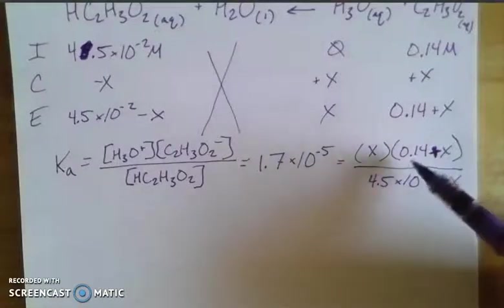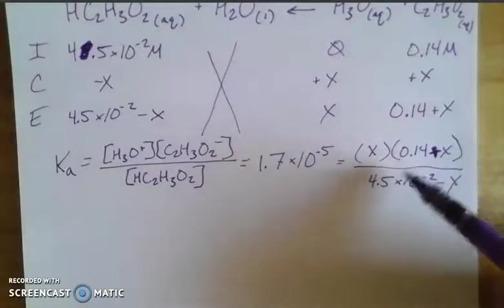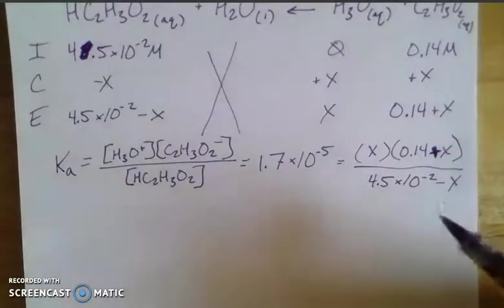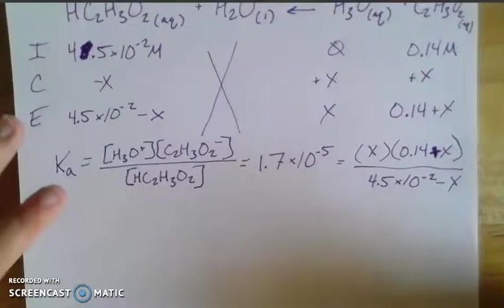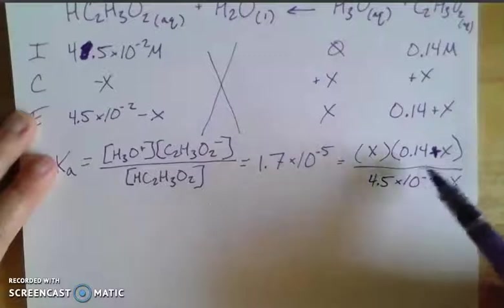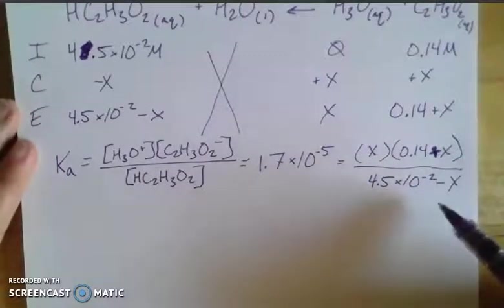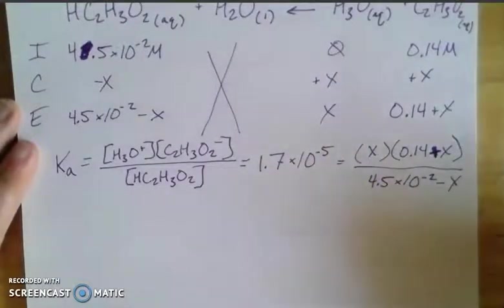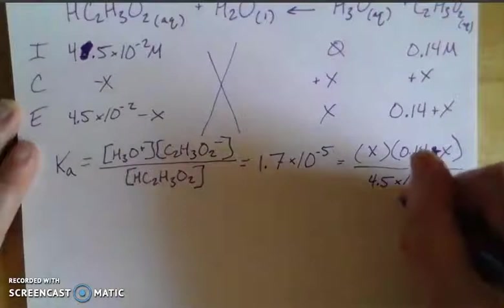And the way that we decide if we can disregard the x's is by comparing this value, the value of my concentrations, to the value of the Ka value. If they have greater than 1,000 times difference, then we can disregard the x. And in this case, we have greater than or at 10 to the third difference. So we're going to disregard our x's to make the math prettier. And really, the reason we can do that is because of the number of sig figs we have. We have two significant figures for each of these guys. The x is going to be so small that when you add or subtract the x to these values, they're essentially going to round out. So we're going to disregard x.